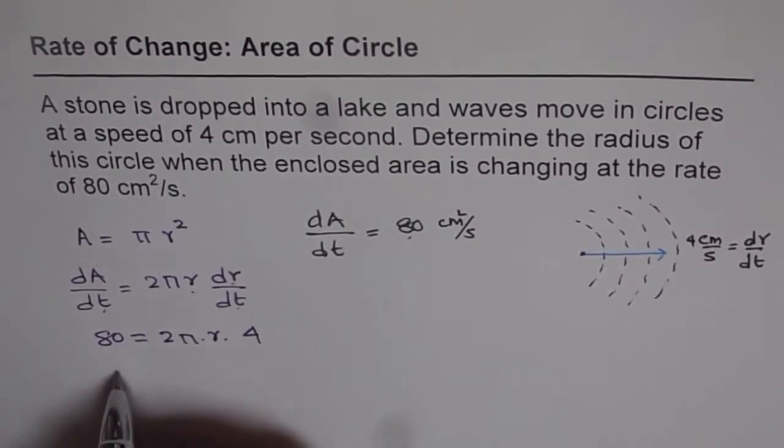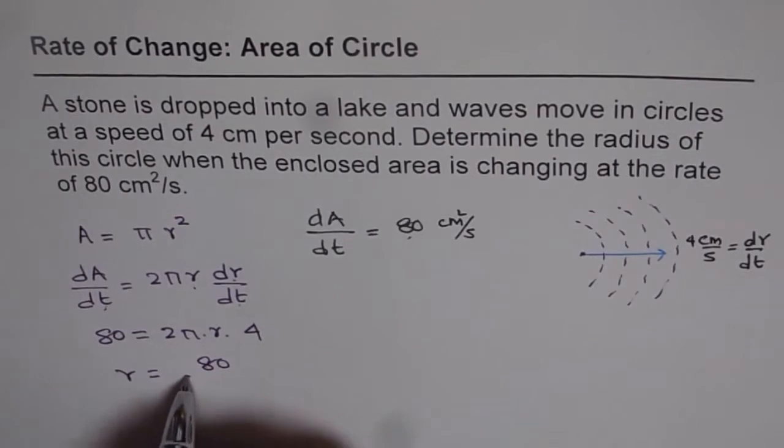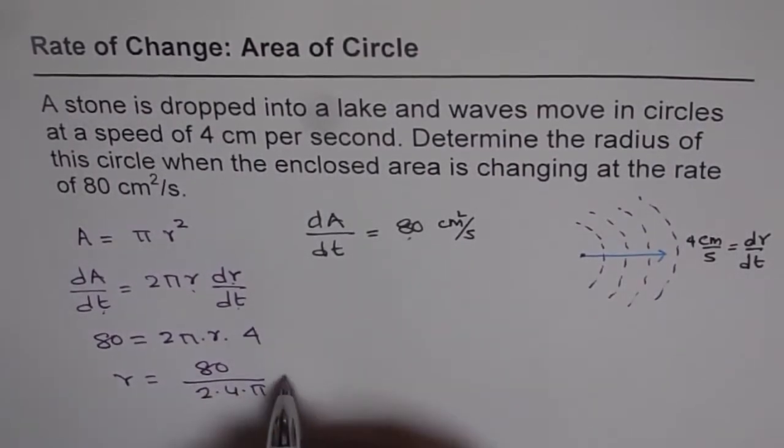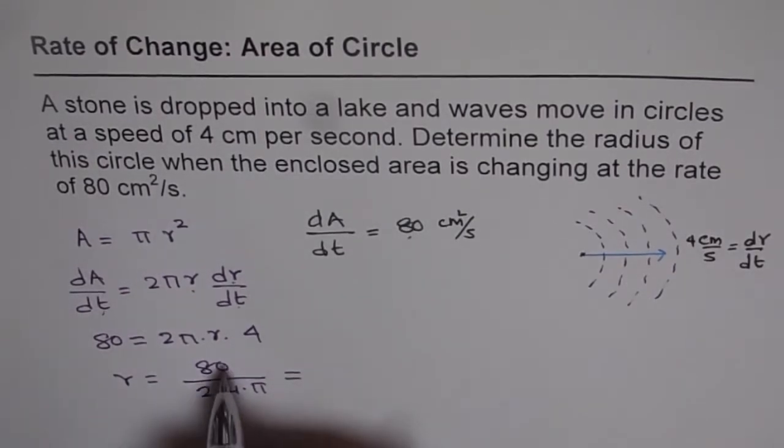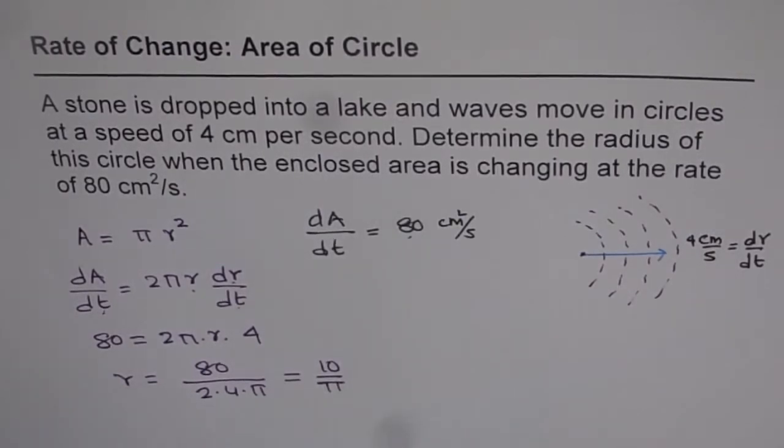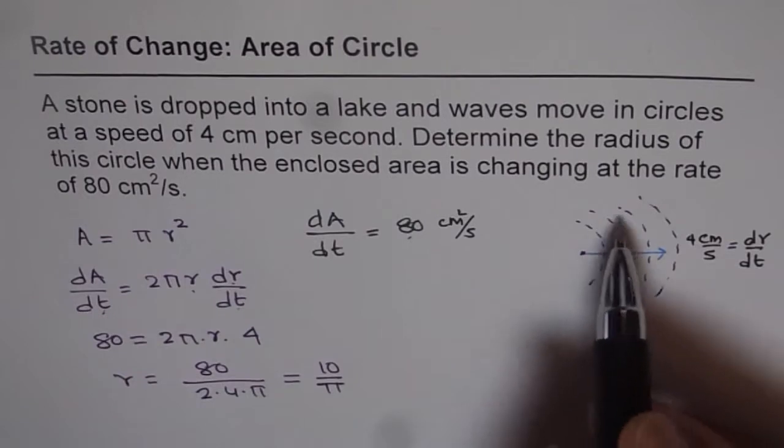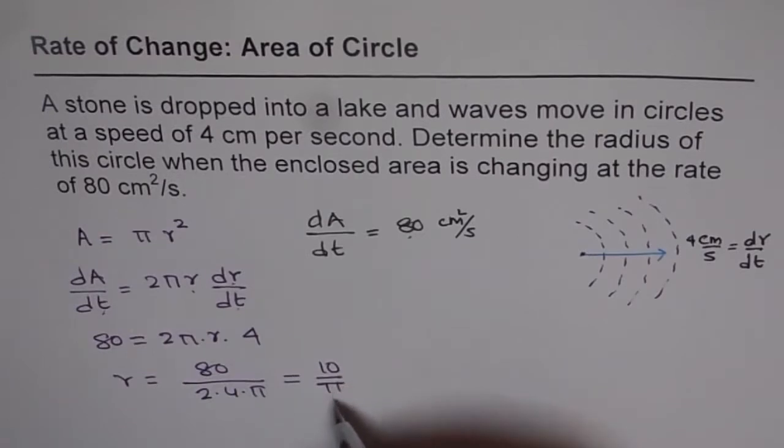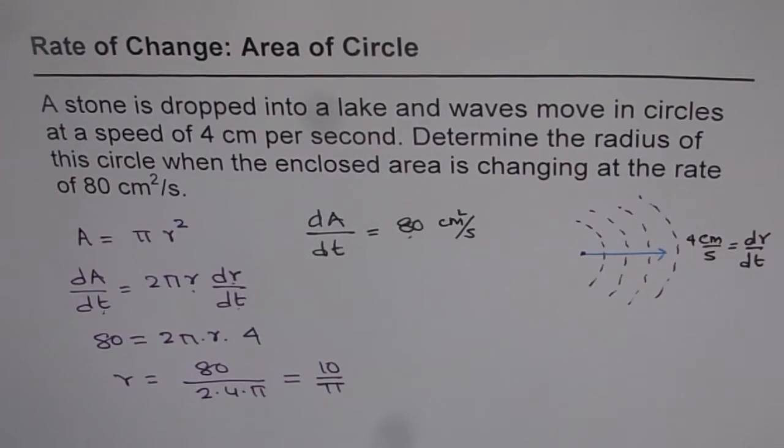Now we can rearrange and find r. So r is equal to 80 divided by 2 times 4 times pi. That gives us 80 divided by 8 is 10, so 10 over pi is the radius of these concentric circles formed when the stone is dropped. You can always find the exact value; you can also find the radius in terms of decimals by dividing. 10 divided by pi gives us 3.18, so approximately 3.2 centimeters.